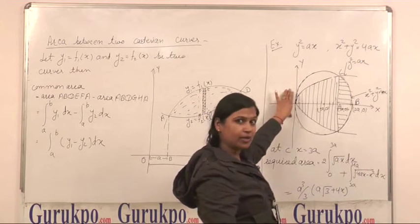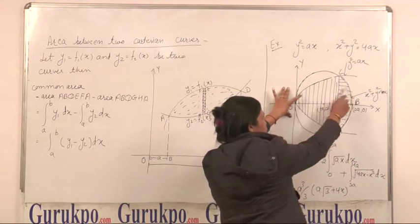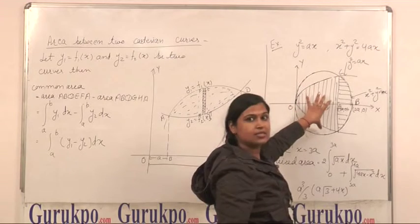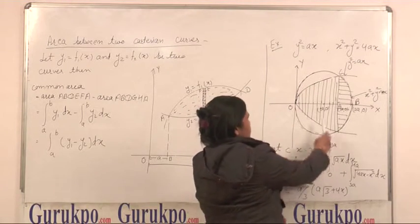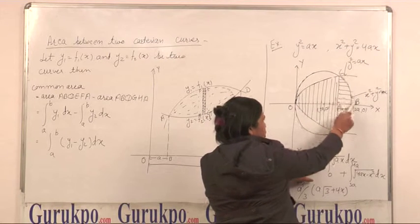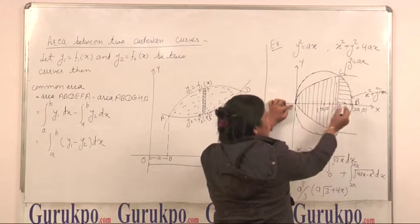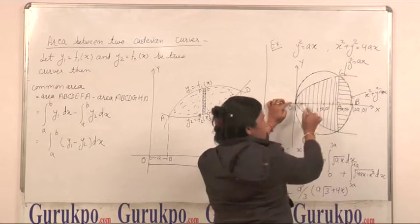Now, we want to find out common area. Then you can see that this shaded area is this common area. Required area is, now you can see here that common area is O, A, B, C, O.